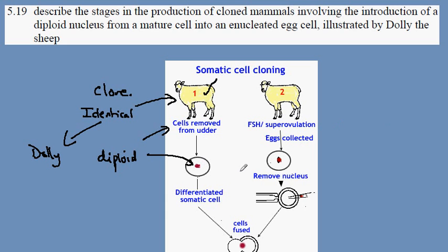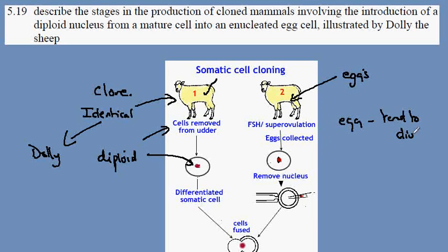At the same time we need to obtain a cell that has a tendency to divide. A completely different animal has been treated with hormones to produce eggs. We get the egg cell, which tends to divide. But we don't want its genetic information, so we remove it — we describe this as enucleated.